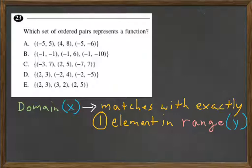If you look at A, we have a negative 5 for the x here, but we also have a negative 5 in the x here. But notice, this same x maps to a 5 there, but it maps to a negative 6 here. It can only go to exactly one element in the range y. We have a 5 and a negative 6, so it cannot be A.